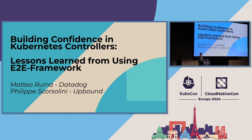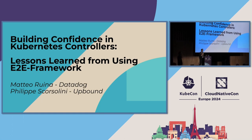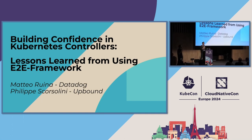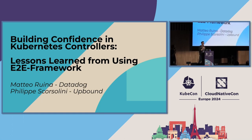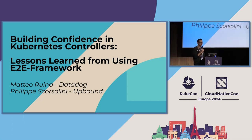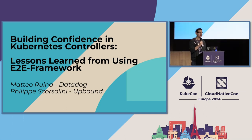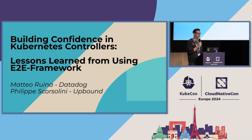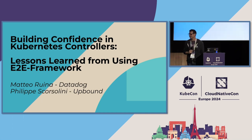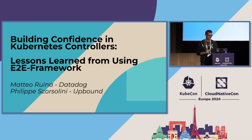My name is Matteo Ruina. I'm a senior software engineer at Datadog, a cloud observability company. I work in the control plane team, where we manage the Kubernetes control plane for our users. Today I'm presenting with Philippe. I'm Philippe Scorsolini. I work at Upbound. I'm a Crossplane maintainer.